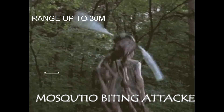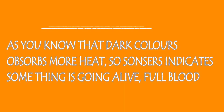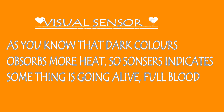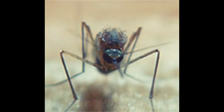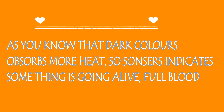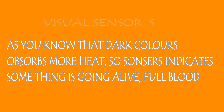The last one is the visual sensor. When you are wearing dark clothes, as you know, dark colors absorb more and more heat. So the visual sensors of the mosquito are activated and give an indication that something is moving, alive, and full of blood. Therefore, the mosquito will reach around you and attack you.